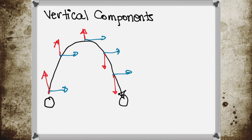Now let's start with our vertical components. Changes due to gravity do not cover equal displacements in equal time periods. So both the magnitude and direction change for vertical components. As the projectile moves up, the magnitude decreases and its direction is upward. As it moves down, the magnitude increases and the direction is downward.